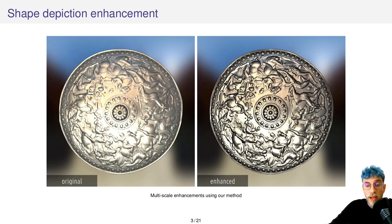We propose an approach to enhance shape depiction in rendered images. Here you can see how our method enhances the shield at multiple scales, revealing both big features and the small details of the model.